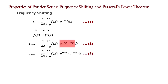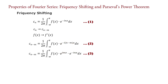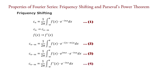Here I separate the exponential term into two parts. Taking f(x) times e raised to i·m·x equal to f′(x), it becomes C_{n minus m} equals 1 upon 2π times the integral from minus π to π of f′(x) times e raised to minus i·n·x dx — equation 4.